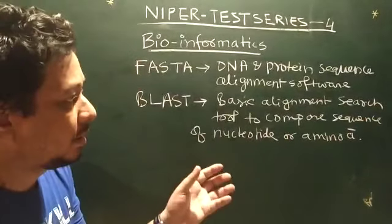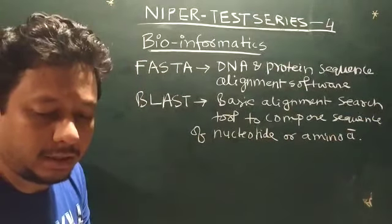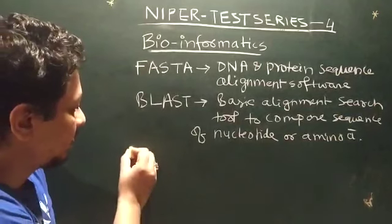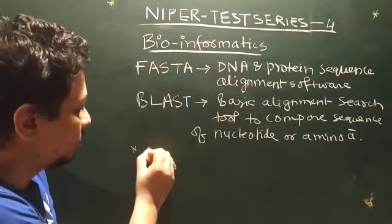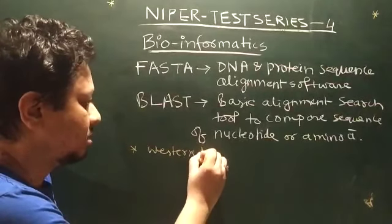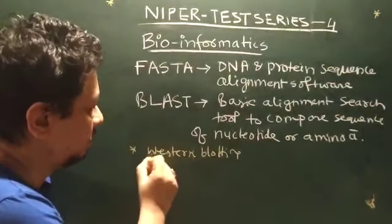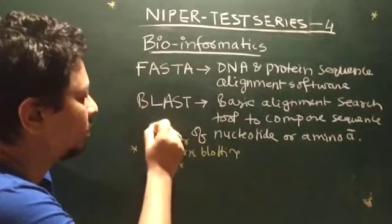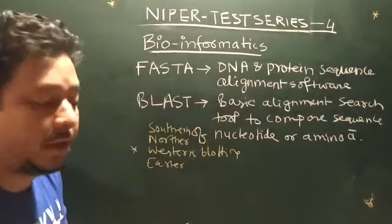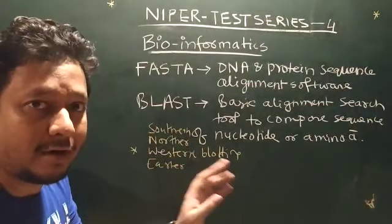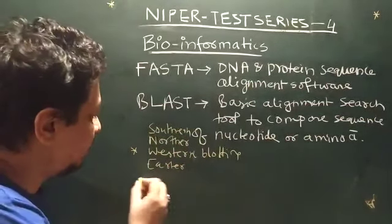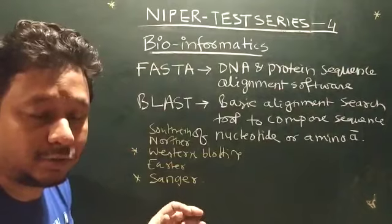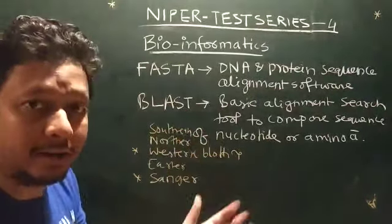You remember there were some basic biotechnical methods to identify DNA and protein sequences. These are your western blotting, eastern blotting, northern blotting, and southern blotting. Southern is for DNA, northern is for RNA. We have already found out those sequences. Then you have DNA sequencing like Sanger methods. These are all old methods to find out sequences, but now this software helps us to compare them.